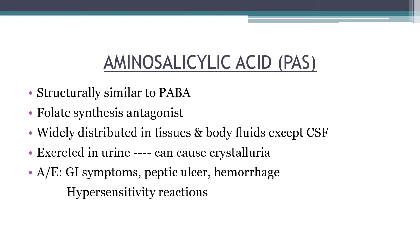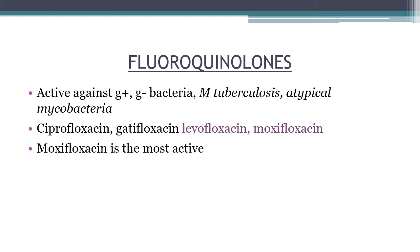Hypersensitivity reactions to PAS are characterized by fever, joint pains, rash, hepatosplenomegaly, adenopathy, and granulocytopenia; if they occur, the drug should be stopped immediately. Fluoroquinolones — ciprofloxacin, gatifloxacin, levofloxacin, and moxifloxacin — are active against gram-positive and gram-negative bacteria, Mycobacterium tuberculosis, and atypical mycobacteria. Moxifloxacin is most active against M. tuberculosis, followed by levofloxacin, then ciprofloxacin. Ciprofloxacin has more activity against atypical mycobacteria. Fluoroquinolones are used in pulmonary tuberculosis and tuberculous meningitis.